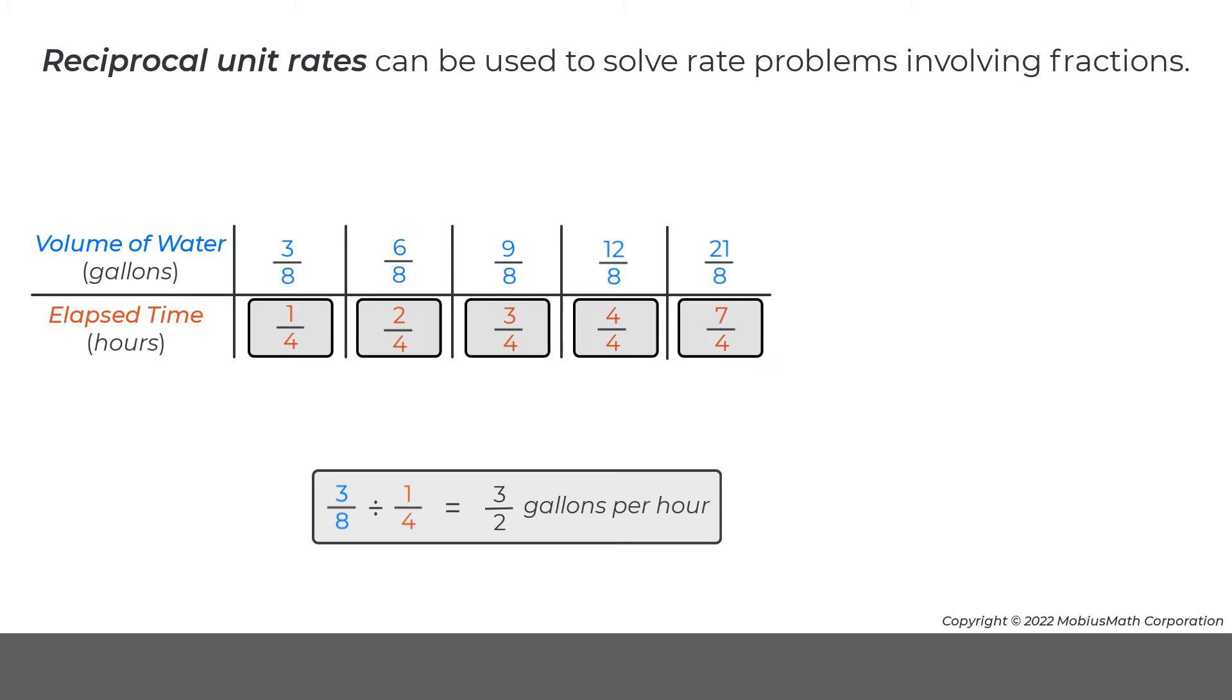Every value for time in the bottom row of the ratio table can be multiplied by 3 halves to get each value for the volume in the top row.